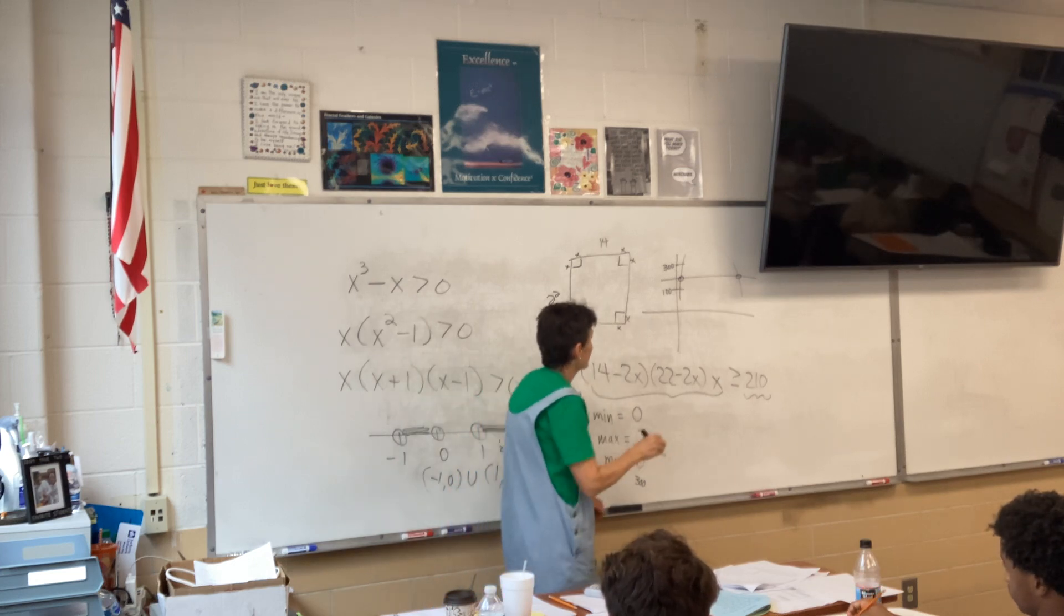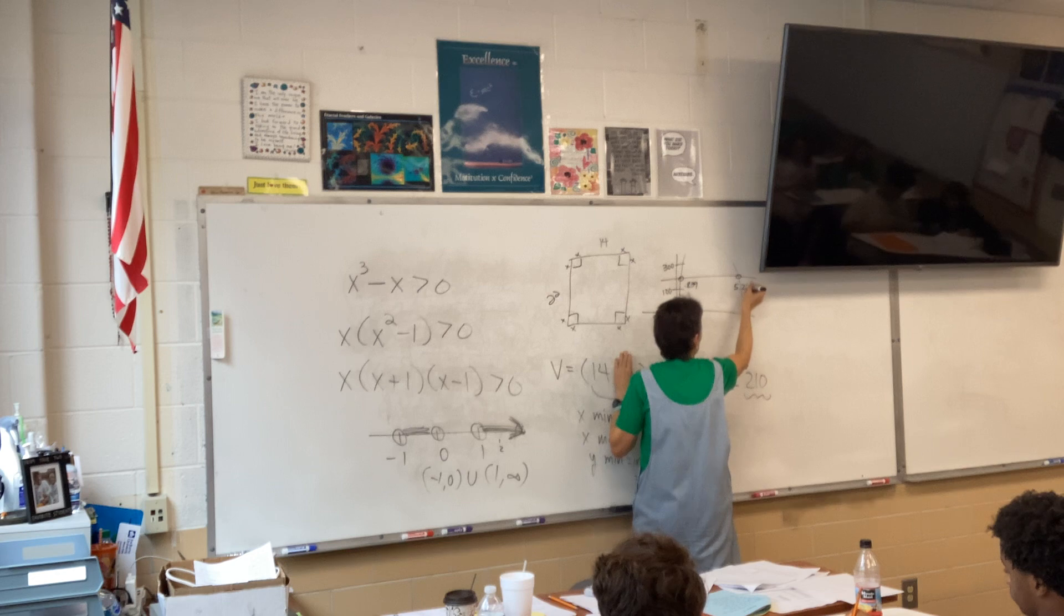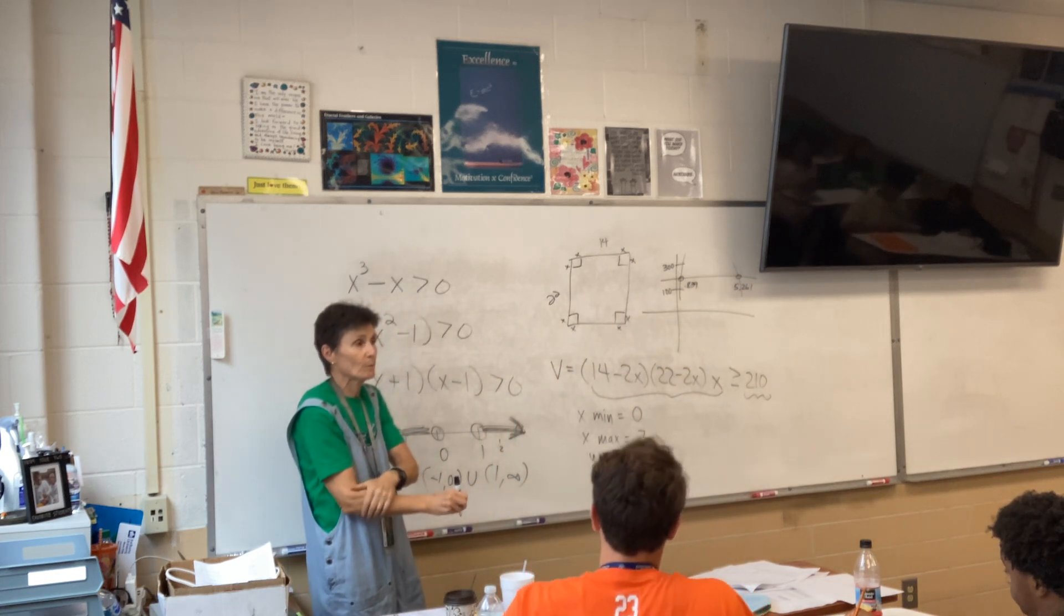0.839, and 5.261. So, what was it? 0.839. And 5.261. So, what do those two points represent? That's where the volume is exactly 210.